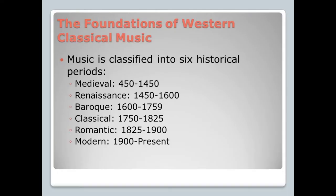When discussing western music, there are six eras: medieval, renaissance, baroque, classical, romantic, and modern. In this video, I will describe the history of all of those except for modern and medieval.